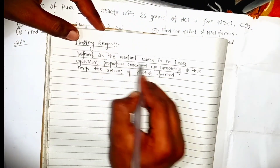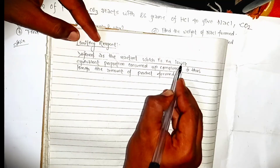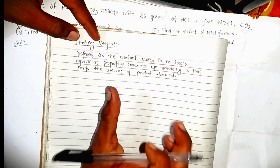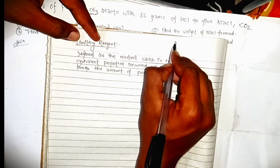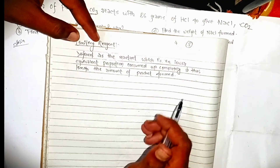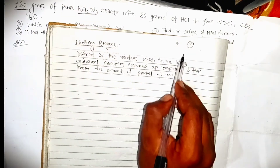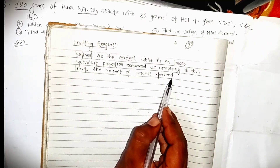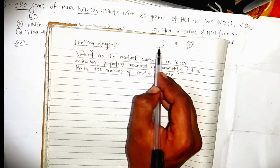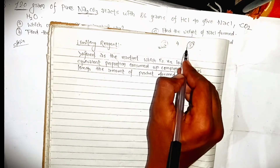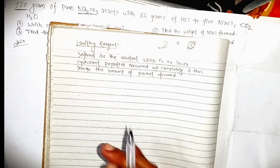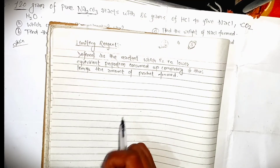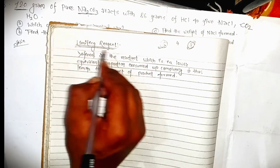Limiting reagent is defined as the reagent which is in lower equivalent proportion. This is the same as: 4 subjects, 3 teachers — which is present in lower proportion, and thus limits the amount of product formed. In 3 subjects, that is how many types of this subject — the one which is consumed — that is the limiting reagent.